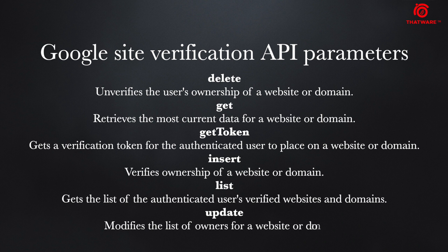The Google Site Verification API provides parameters such as delete, get, get token, insert, list, and update — all providing a particular set of functions. For example, the get parameter retrieves the most current data of a website, the insert parameter verifies ownership of a particular domain, and the delete parameter allows you to unverify if you would like to do so.